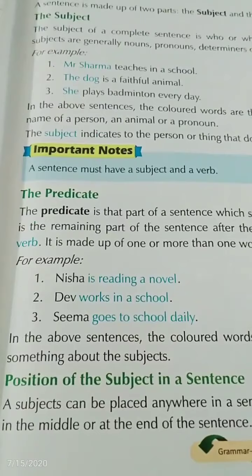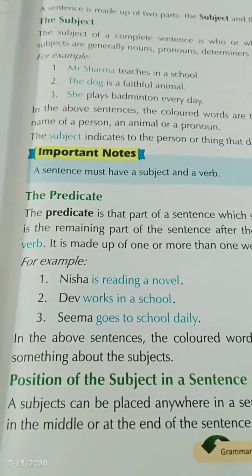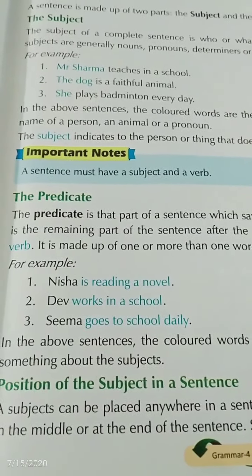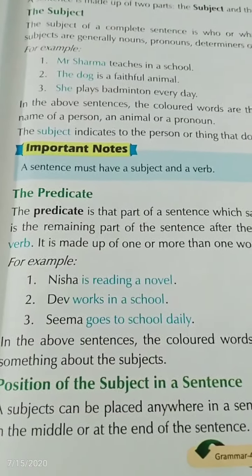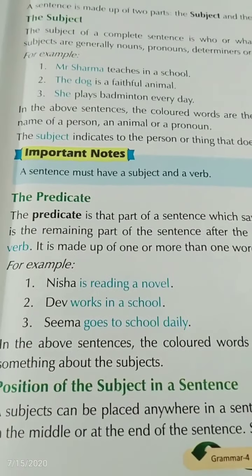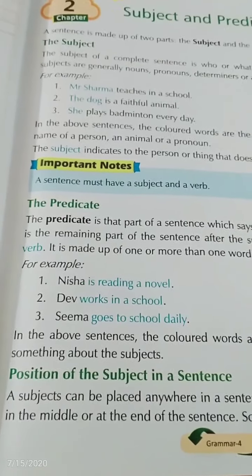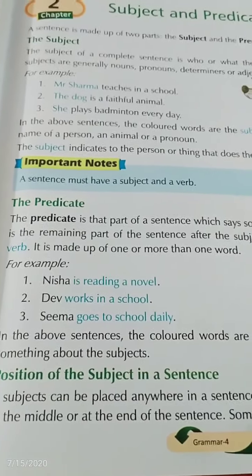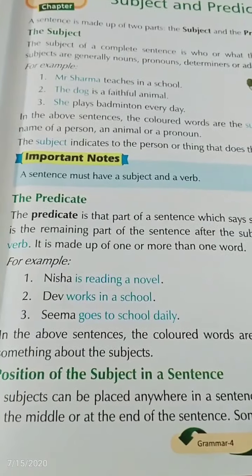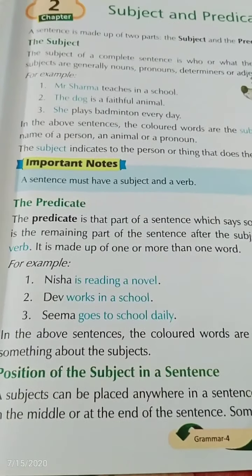In the second example, Dev works in a school. Dev is the name of a person, so Dev is the subject, and 'works in a school' is the predicate — it tells the action of Dev. In the third example, Sima goes to school daily. Sima is the subject and 'goes to school daily' is your predicate.